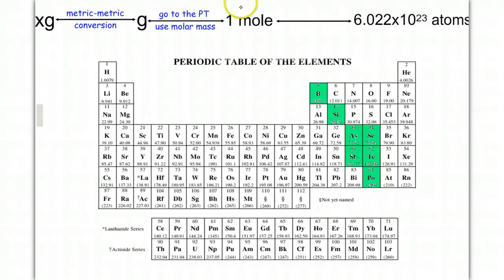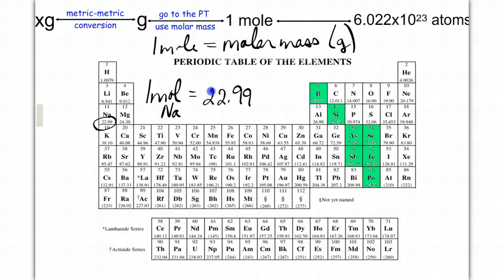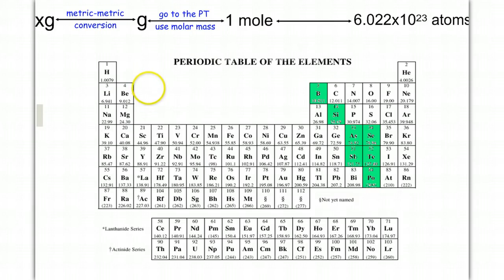Here I'm presenting you with a kind of map. Notice here's our new conversion factor: one mole is going to equal the molar mass of any compound on the periodic table. Mass is expressed in grams, so if I wanted to know how many grams are in one mole of sodium, I would look at the average atomic mass of sodium — one mole equals 22.99 grams of sodium. Likewise, if I have one mole of nitrogen, that's equal to 14.007 grams of nitrogen.